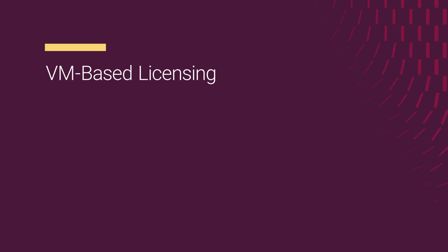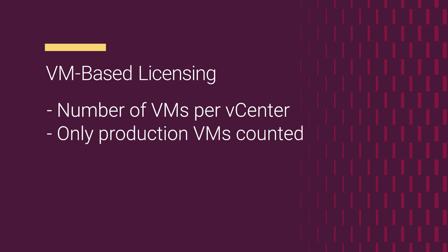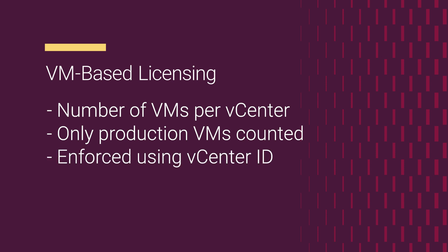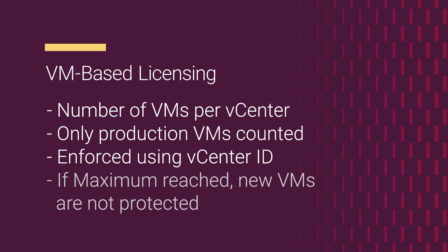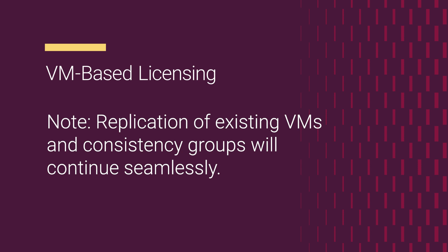With VM-based licensing, licenses are tied to the number of protected virtual machines per vCenter server. Only production VMs are considered in this count. For instance, if your license capacity is for 30 VMs, you can protect up to 30 VMs. The licensing process is initiated using the vCenter server ID. Once you reach the maximum number of VMs supported by the license for each vCenter server, you won't be able to protect new VMs or enable disabled consistency groups.